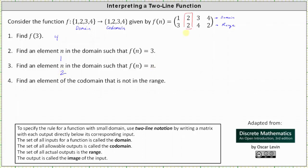For the last problem, we're asked to find an element of the codomain that is not in the range. Well, the codomain is a set with elements one, two, three, and four. And analyzing the second row of the matrix, we can see the range is the set containing the elements two, three, and four. Notice one does not appear in the range. And therefore the element of the codomain that is not in the range is the element one.